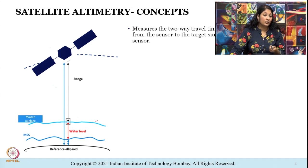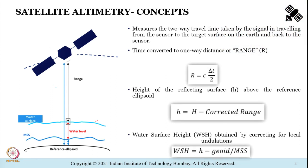This two-way travel time is used to estimate the distance of the sensor from the target — the target being the water level. In the case of radar altimetry, the two-way travel time of microwave pulses is used to estimate the distance of the sensor from the target, the water level. This time is converted to one-way distance or range.